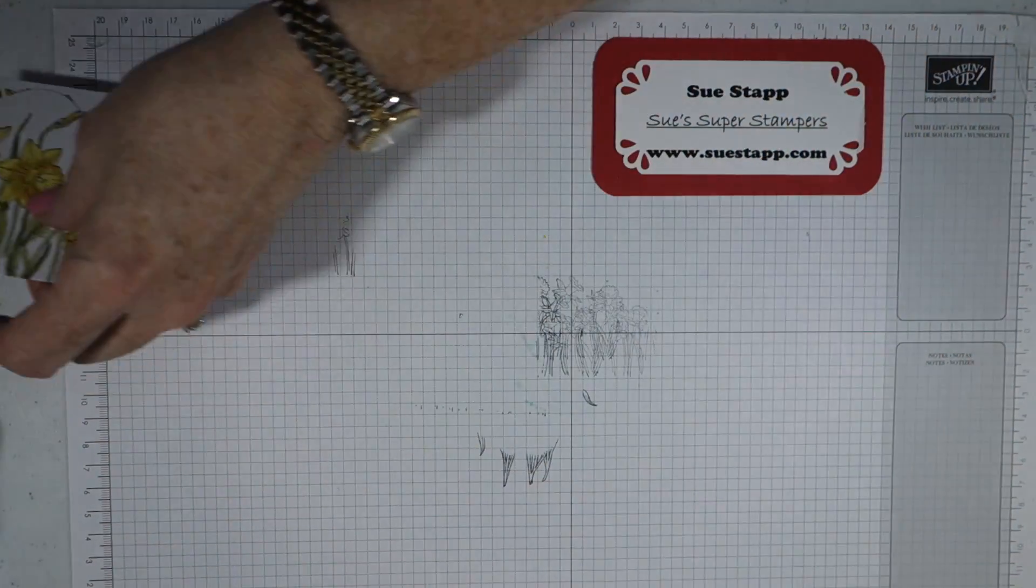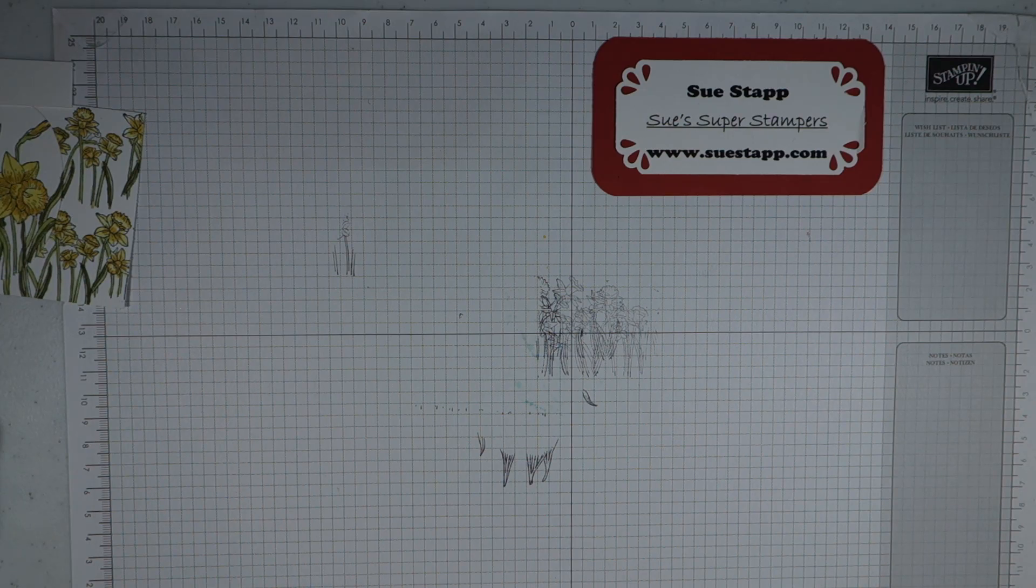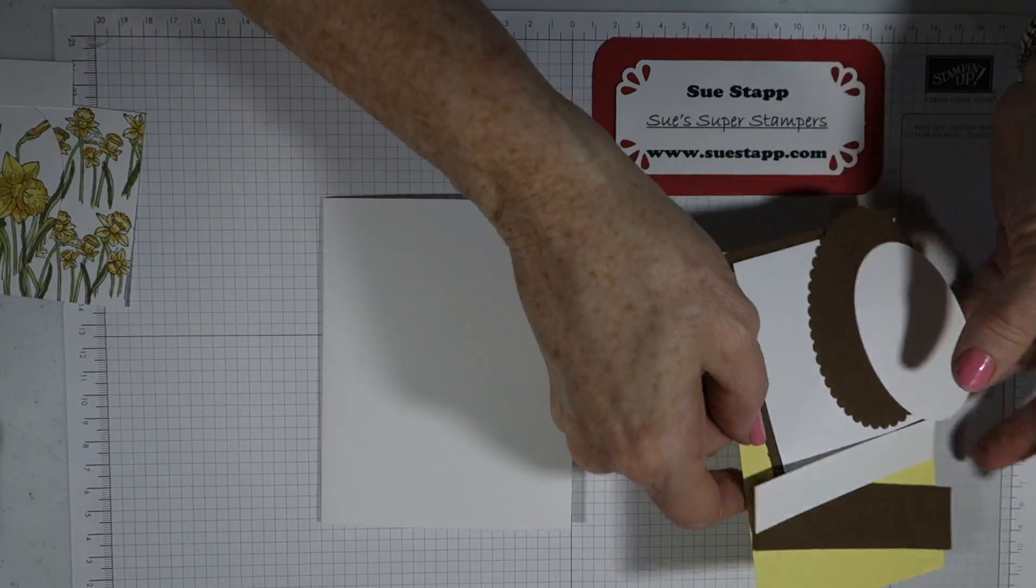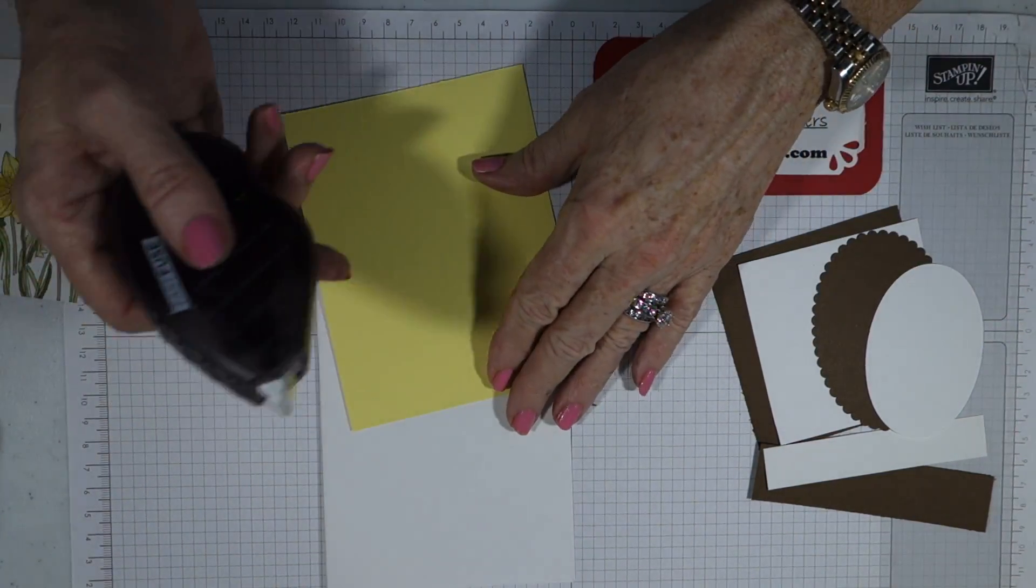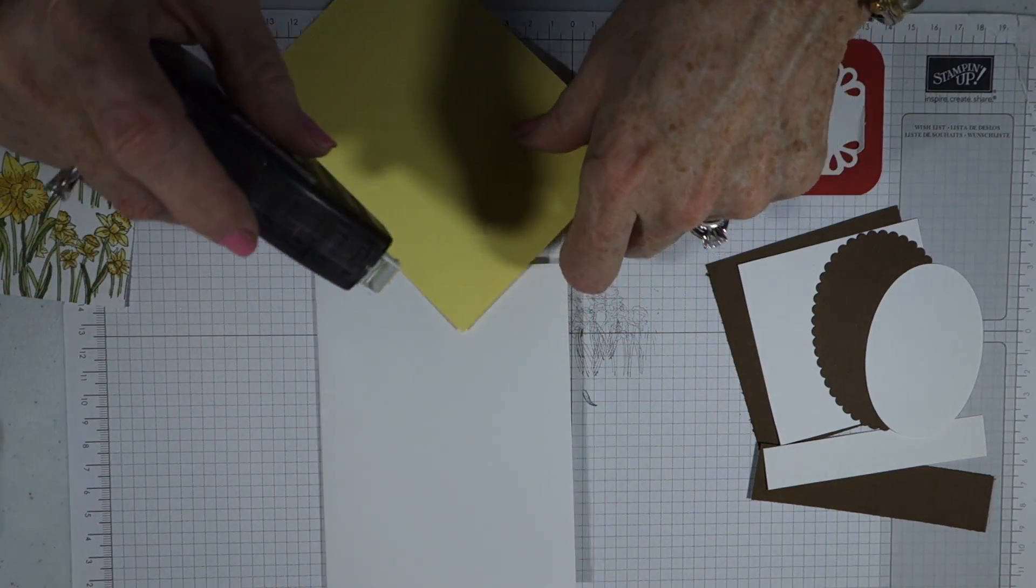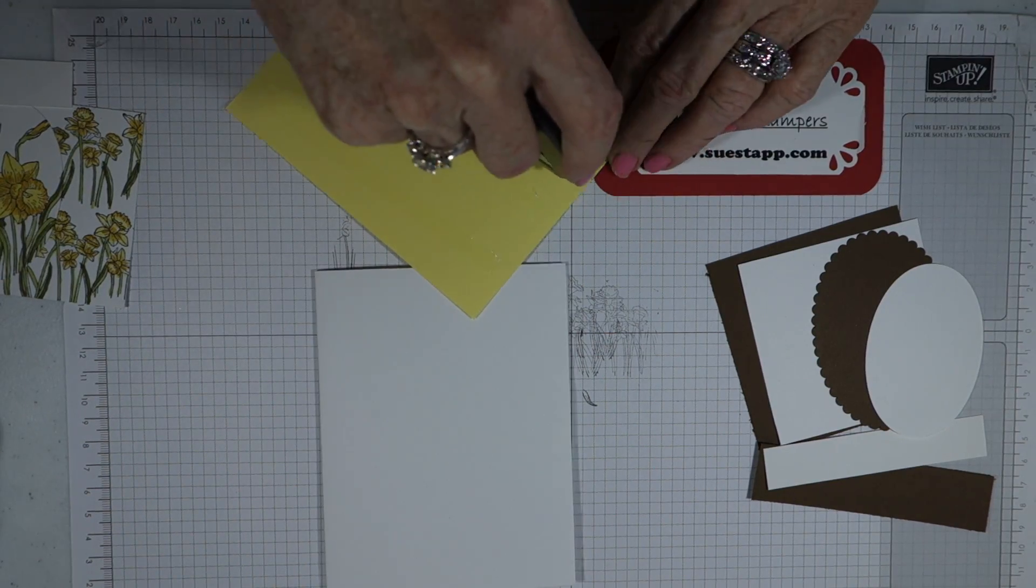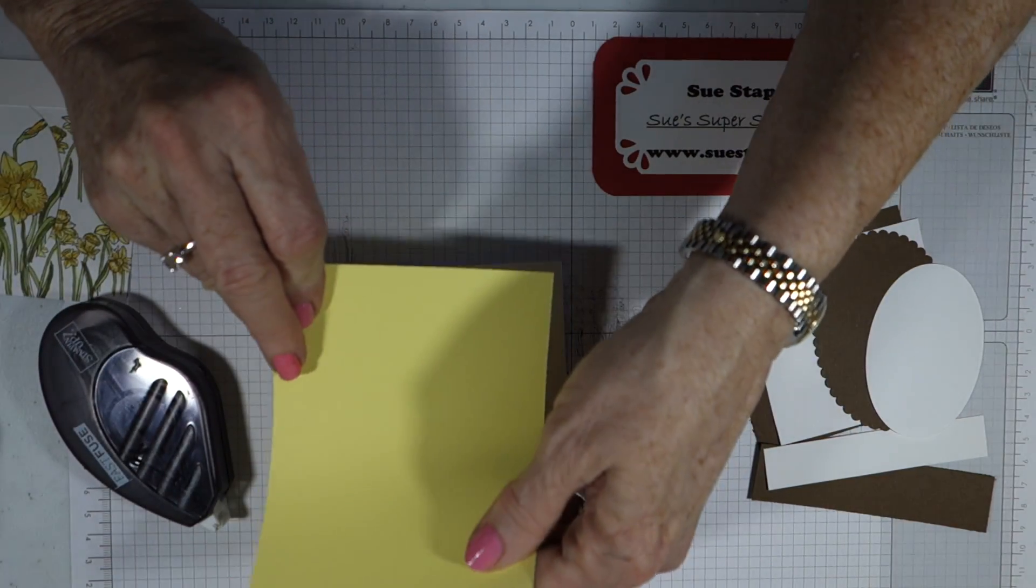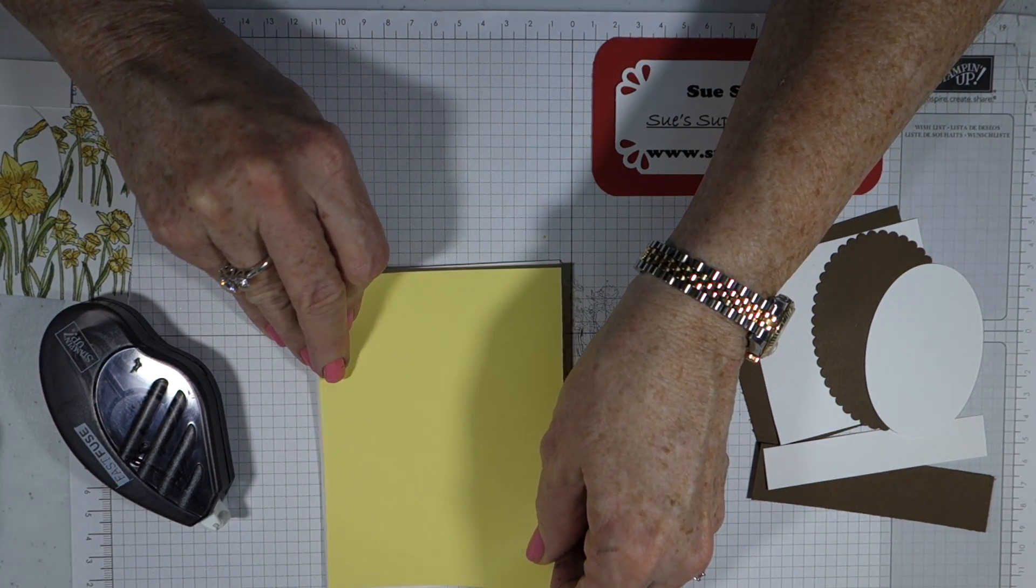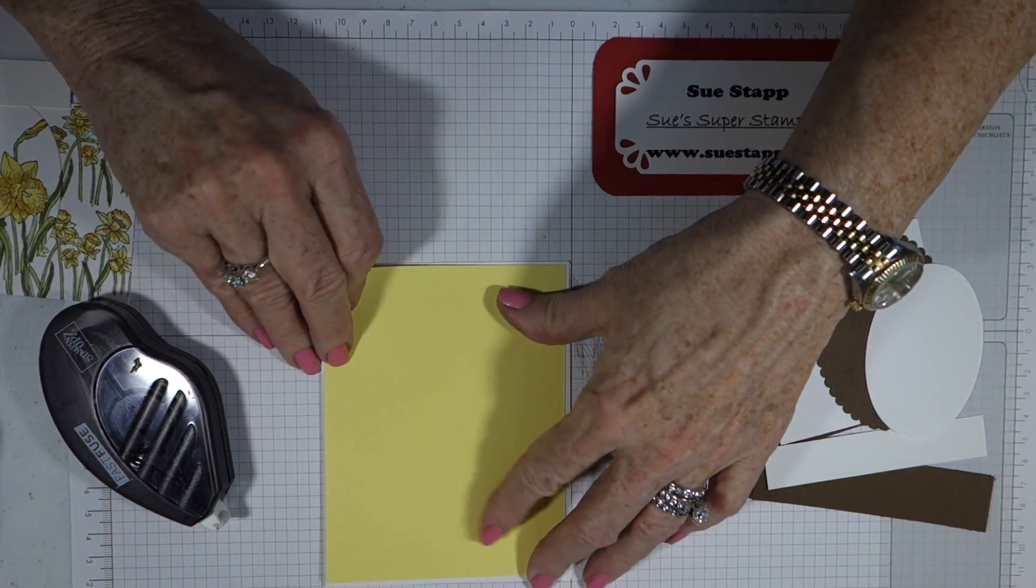So let's put our card together. I have the Happy Easter stamp already done that we did. We're going to use our adhesive—you can use Fast Fuse or a glue runner. This is going to have multiple layers, so I'm going to put a Fast Fuse down here. Fast Fuse you just give it a check mark at the end, alternate the sides. Now this is super sticky, so where it goes, it stays.